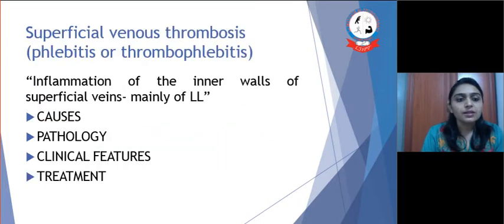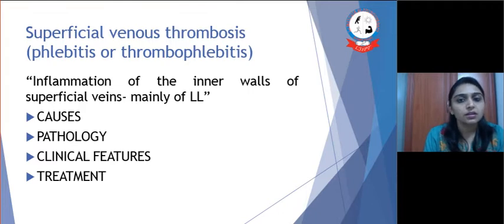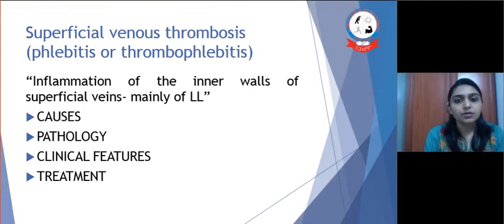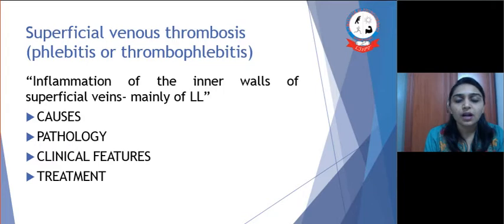Now let's see superficial venous thrombosis in detail. It is one of the peripheral vascular diseases in which inflammation of the inner wall of the superficial veins occurs, mainly of the lower limb.